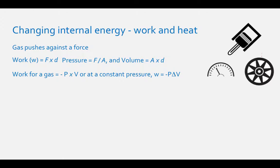If this expansion is against a constant pressure, then work is defined as the negative of the pressure times the change in volume of the gas. The ideal gas law equation is pressure times volume equals the number of moles times the gas law constant times the temperature, or PV equals nRT. Sometimes reactions take place that involve a change in the number of moles of a substance. In this case, work equals negative the change in the number of moles of gas times the gas law constant times temperature.